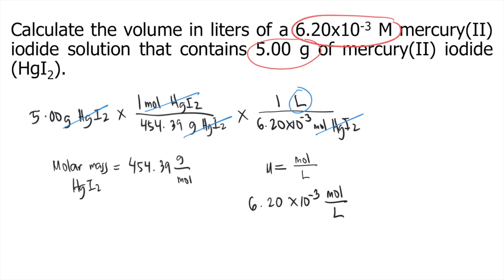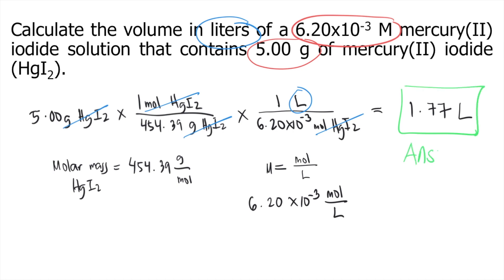Our final unit is liters, which is what the question asks for. All you have to do is solve this in your calculator: 5 × (1/454.39) × (1/(6.20×10⁻³)), which gives approximately 1.77 liters. That is the answer to the question.